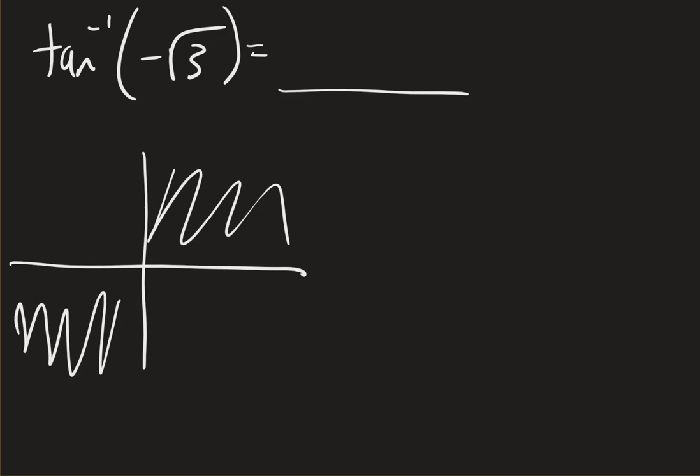And square root of 3 are the ones near the y-axis. So I know that tangent is negative square root of 3 here and here, everywhere on the unit circle.